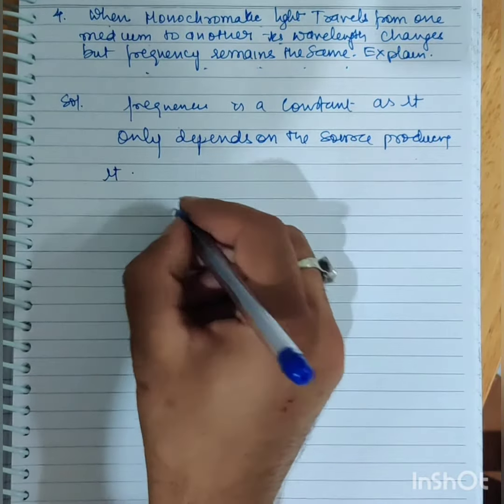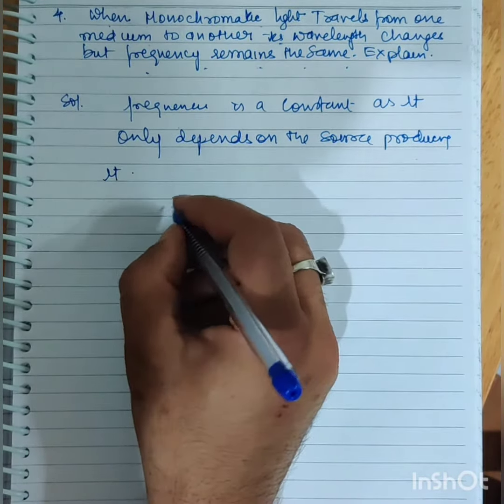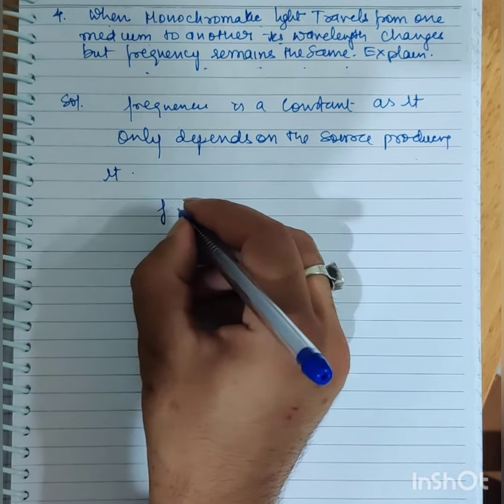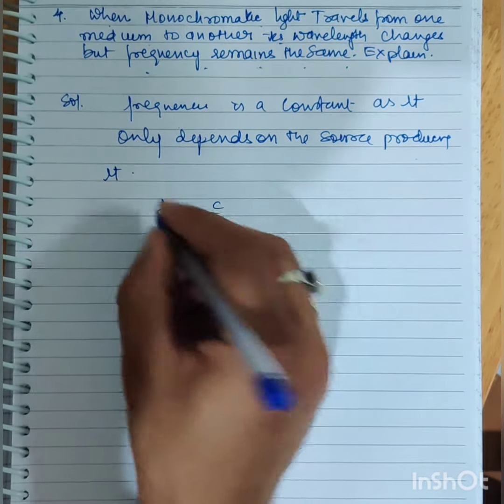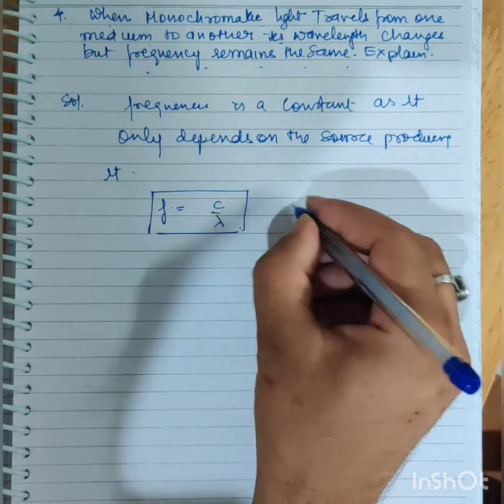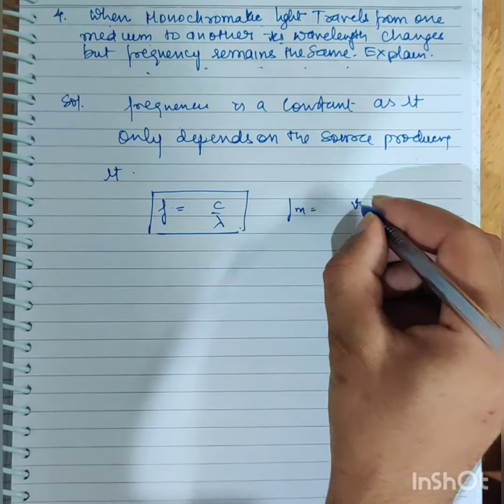Now we know that frequency is c by lambda, and in any other medium we have to use v by lambda m.